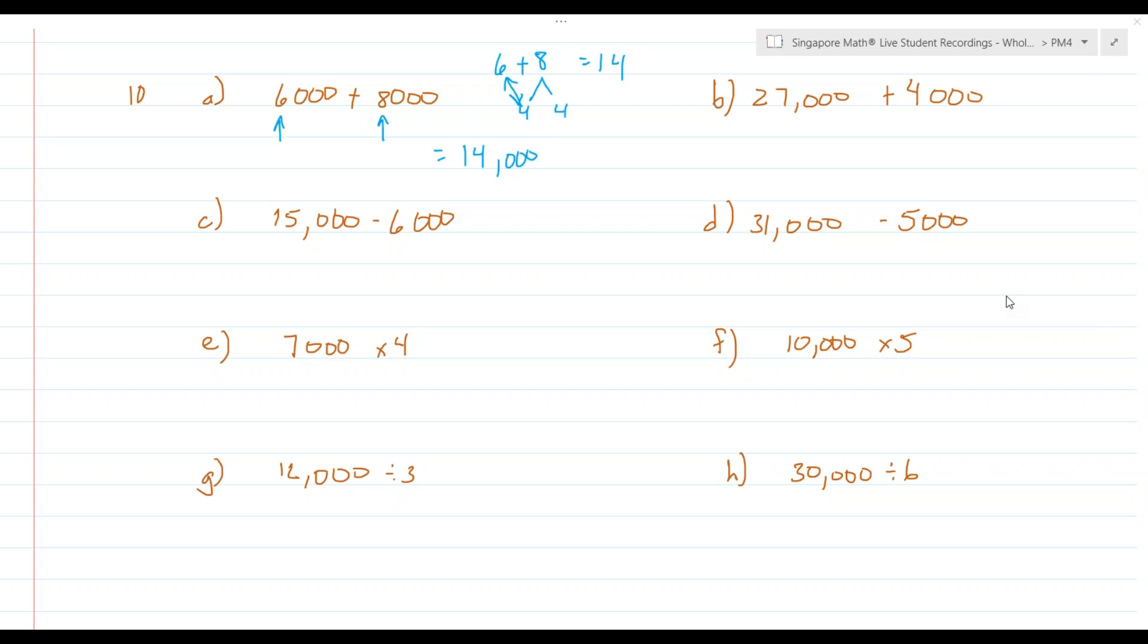Now, we don't have to do that every time, you can just think through. Letter B, 27,000 plus 4,000, 27 needs 3 to make 30, and I have one more, so that's going to give me 31,000.